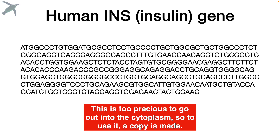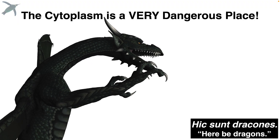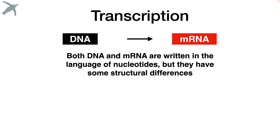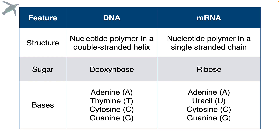The DNA is way too precious to let out into the cytoplasm, because the cytoplasm is a very dangerous place. So in order to use this gene, we make a copy of it. This process is called transcription, and the copy is called a transcript. The transcript is messenger RNA. Both DNA and messenger RNA are written in the same language, but they look a little bit different. Key differences include double-stranded versus single-stranded, and deoxyribose versus ribose. You need to notice this: in DNA we have the base thymine, but in mRNA we have uracil instead.